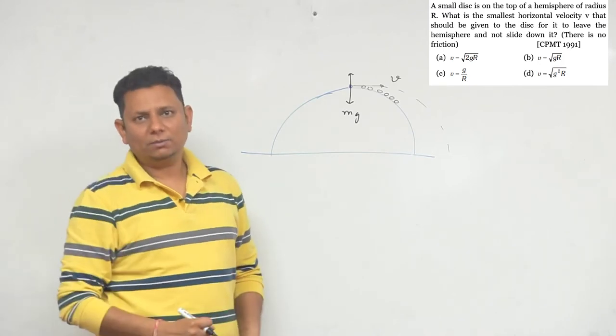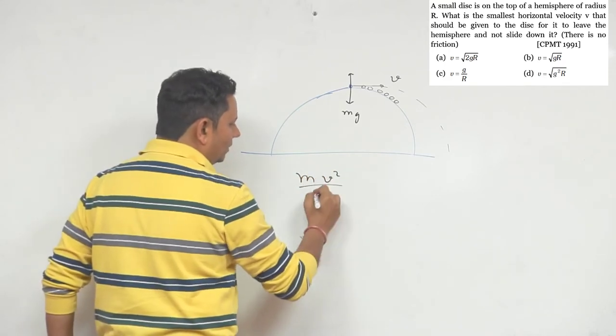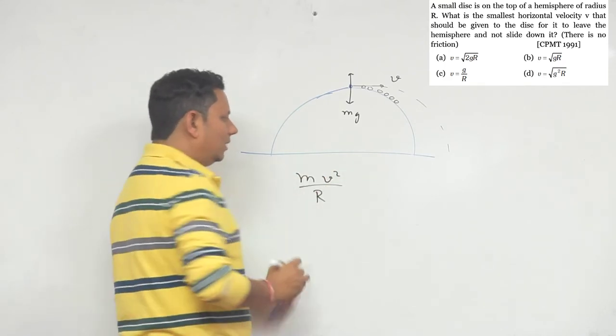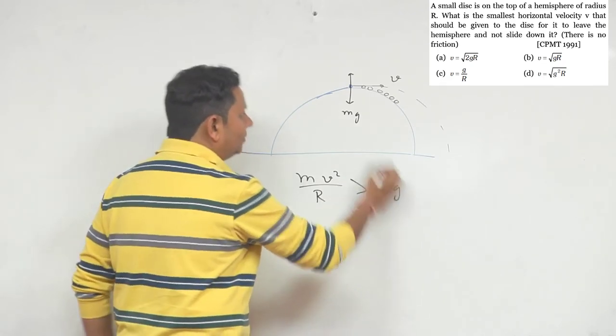And if the path is circular, then in that case your force value will be mv²/r. Now this force value should be greater than the mg force which will try to keep it stuck below.